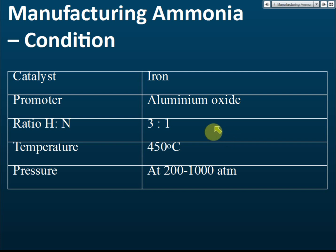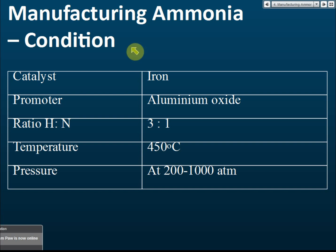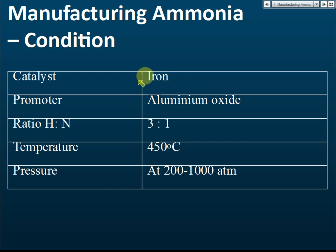Now for the conditions of the Haber process: since it is a reversible reaction, we need optimum conditions to get the most product in the shortest time. To speed up the reaction, we use a catalyst. The catalyst used in the Haber process is iron, or iron powder. You must remember this. We also have a promoter, which is aluminum oxide. A promoter increases the amount of products, while a catalyst increases the speed of the reaction.